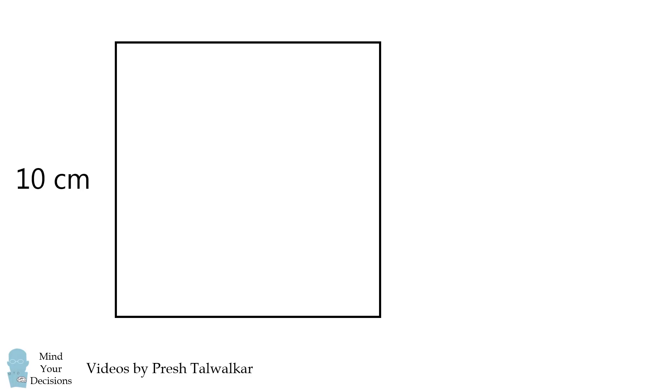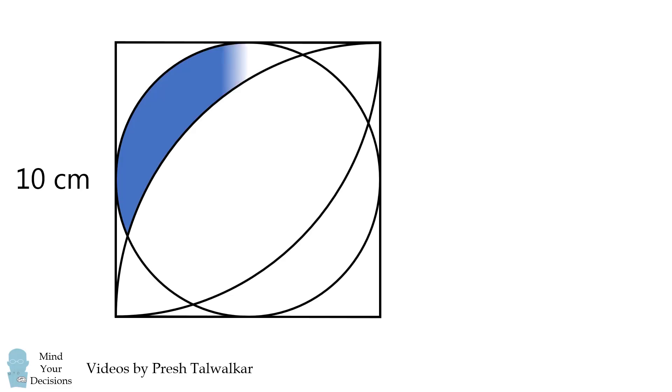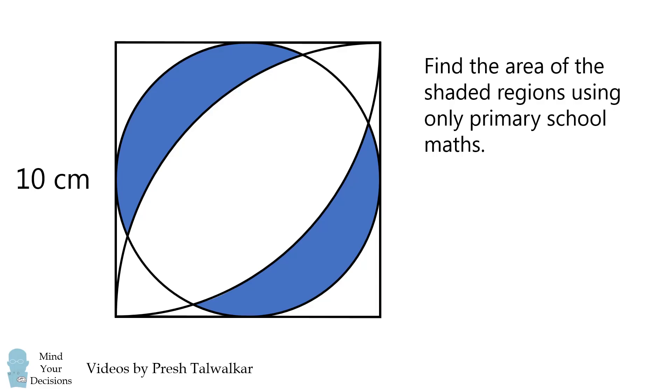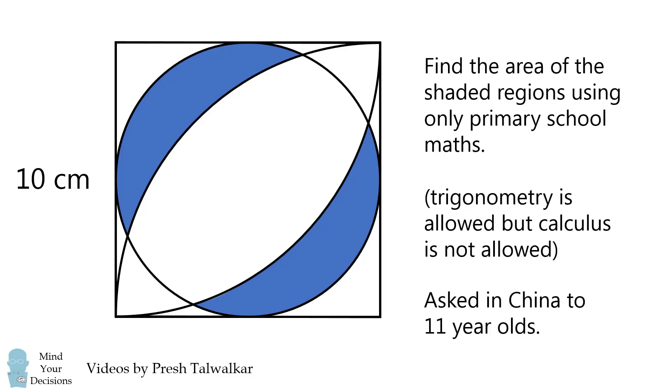Hey, this is Presh Talwalkar reminding you to mind your decisions. Start with the square whose side length is 10. Draw an inscribed circle and then draw two quarter circles. Solve for the area shaded in blue using only primary school maths. That means trigonometry is allowed, but calculus is not allowed. This was asked in China to 11 year olds.